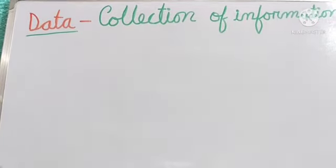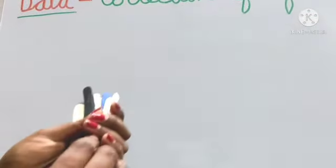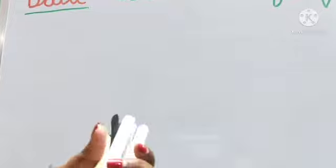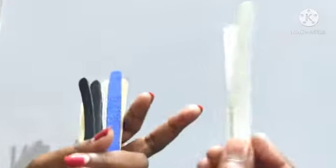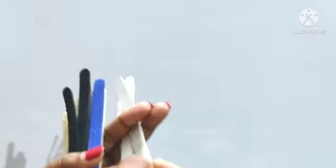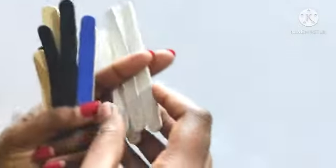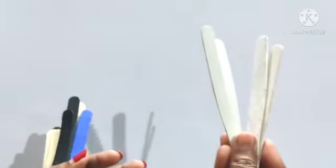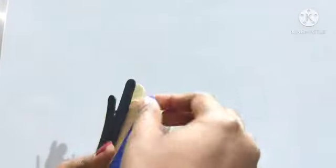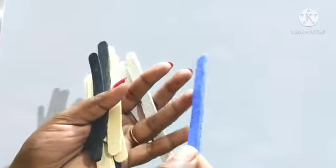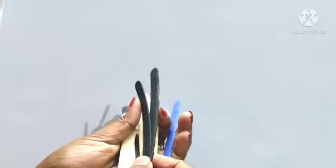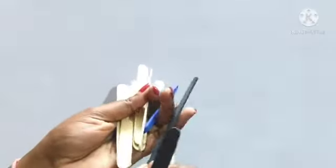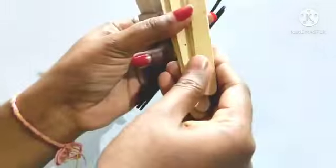Now let us count how many are colored and how many are not colored. White color — as we can see: 2, then 3 and 4. How many white color ice cream sticks are there? 4. Next, blue color — only 1. Black color: 2 and 1 more, so 3. Black color 3, and 5 are no color.